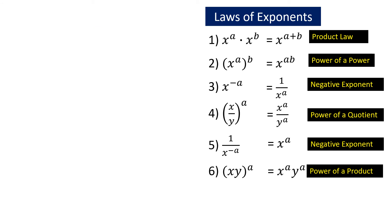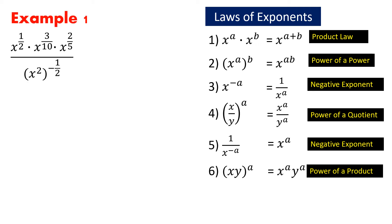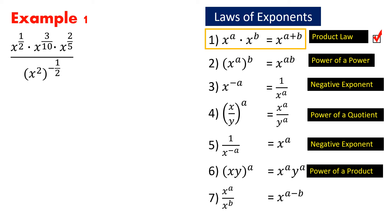Your solution could be similar to any of the following. Now we shall simplify other expressions using laws of exponents. In example 1, we simplify this expression. Before we do, recall how we simplify x to the power a all over x to the power b. It is quite similar to x to the power a times x to the power b, which equals x to the power a plus b. However, since the operation is division, we subtract the exponents, so we have x to the power a minus b. Now, let us take a look at example 1. Which of the laws of exponents should we use to simplify the numerator? It looks like we could use the product law, so we would have this expression.